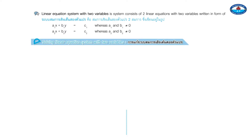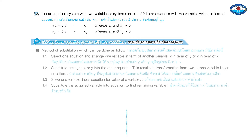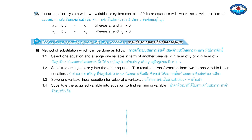Solving a Linear Equation System with Two Variables — Method 1: Substitution. Step 1: Select one equation and arrange one variable in terms of another variable — x in terms of y, or y in terms of x.